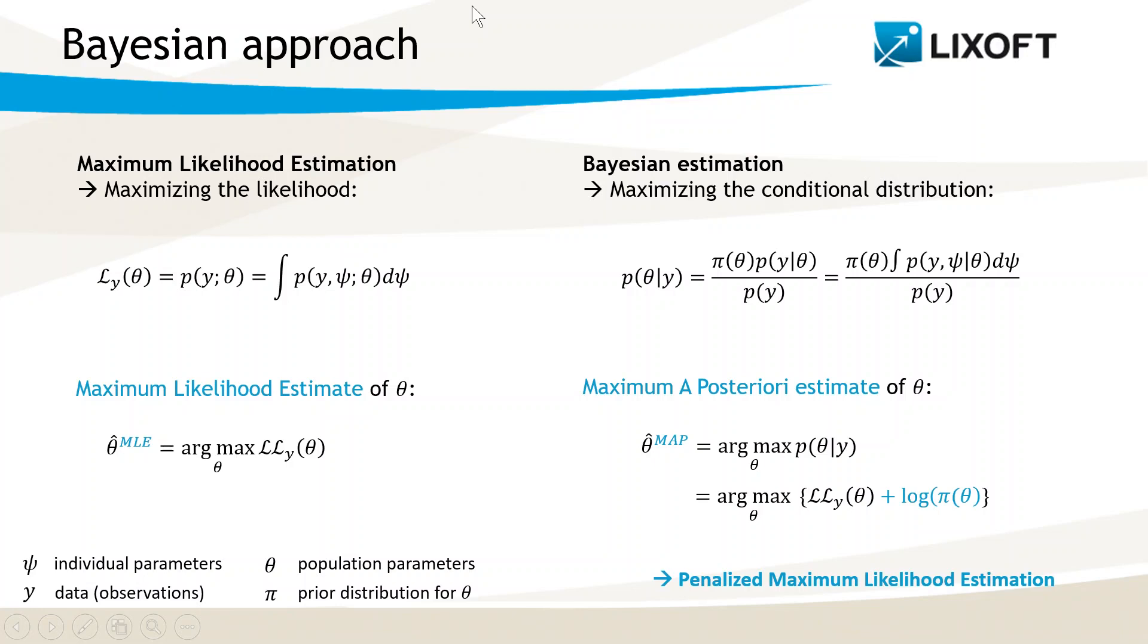Let's now detail what the Bayesian estimation approach means. The default estimation method in Monolix maximizes the likelihood, which is the joint distribution of the observed data and the population parameters. The Bayesian approach considers the vector of population parameters θ as a random vector with a prior distribution π.